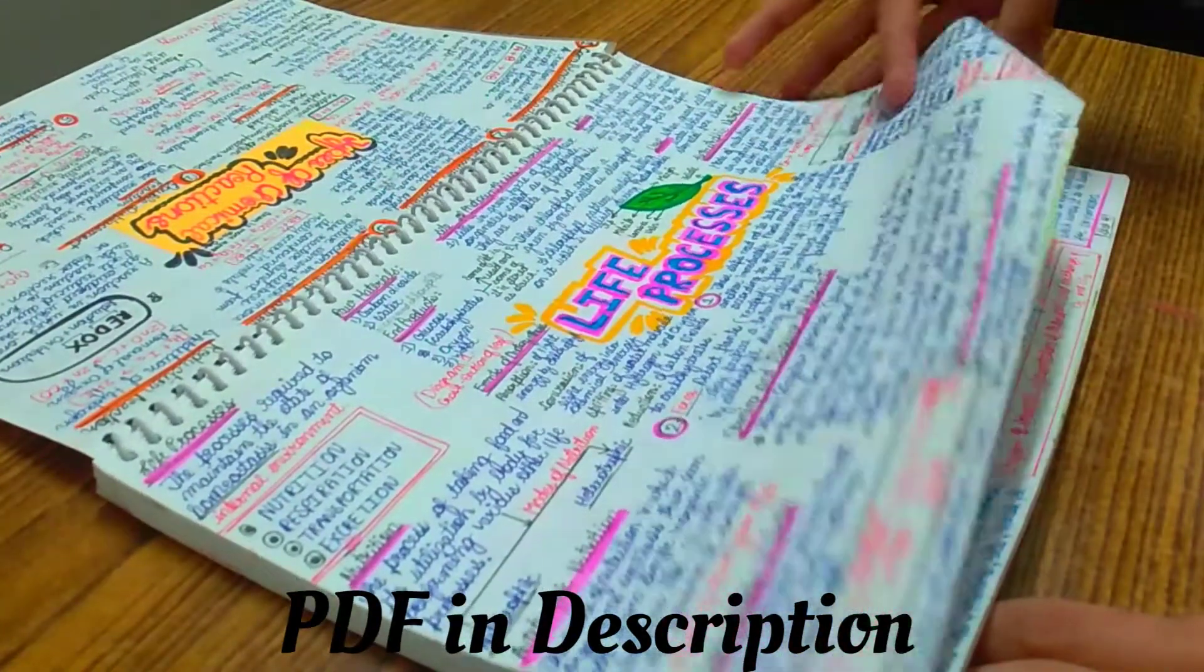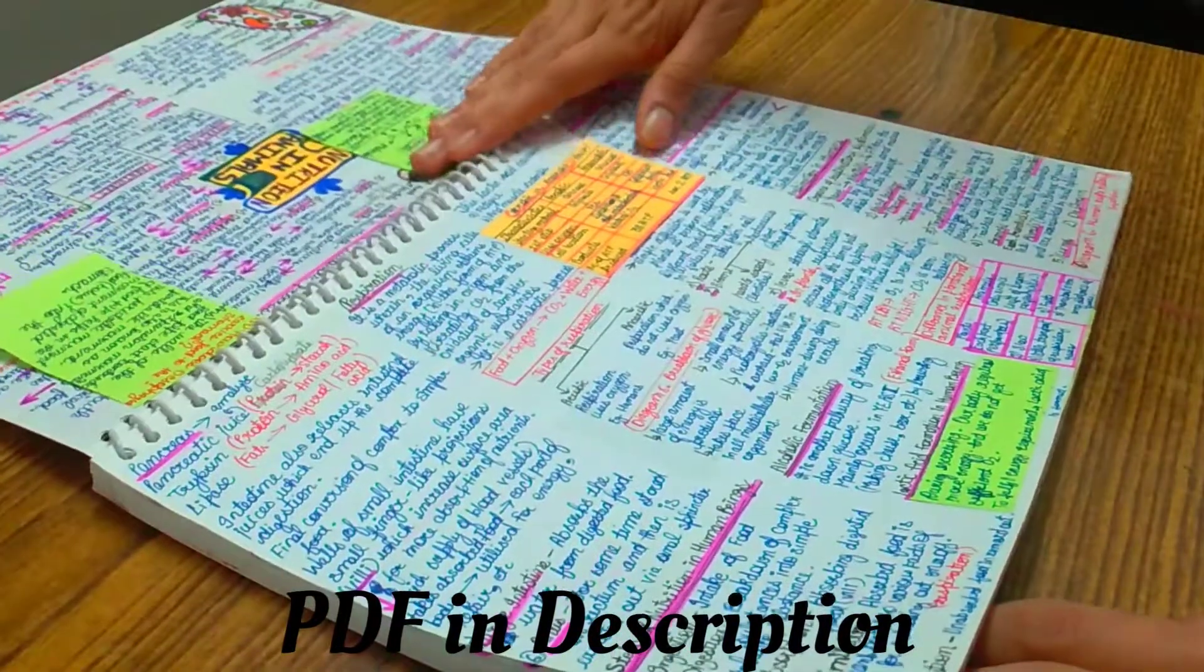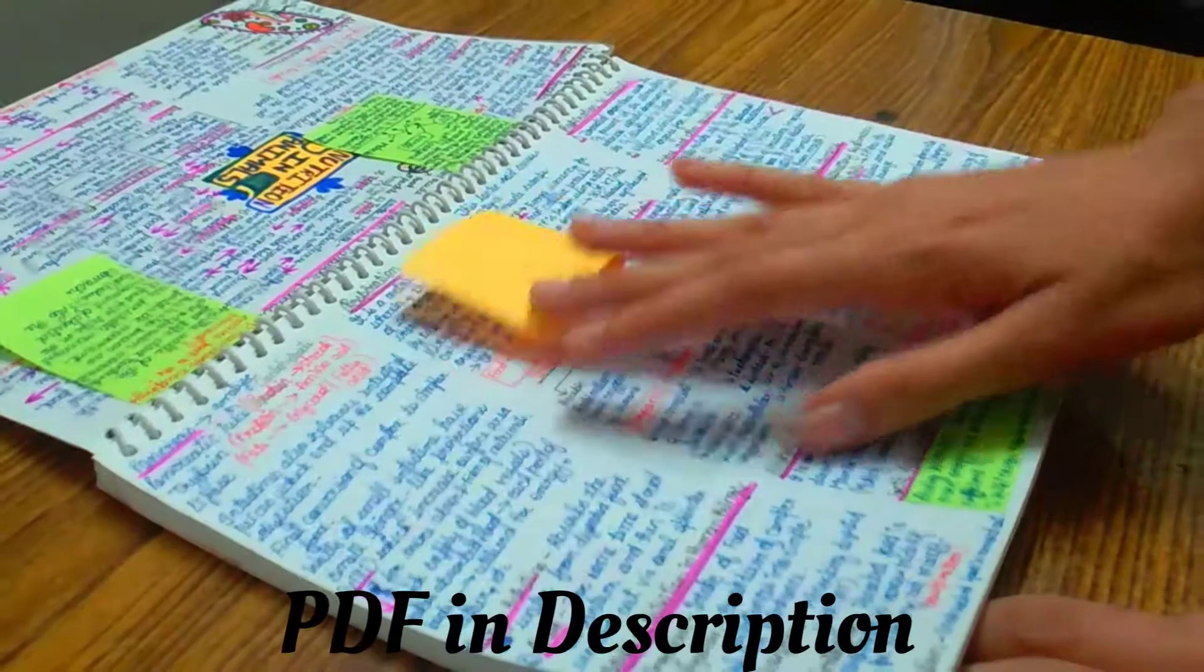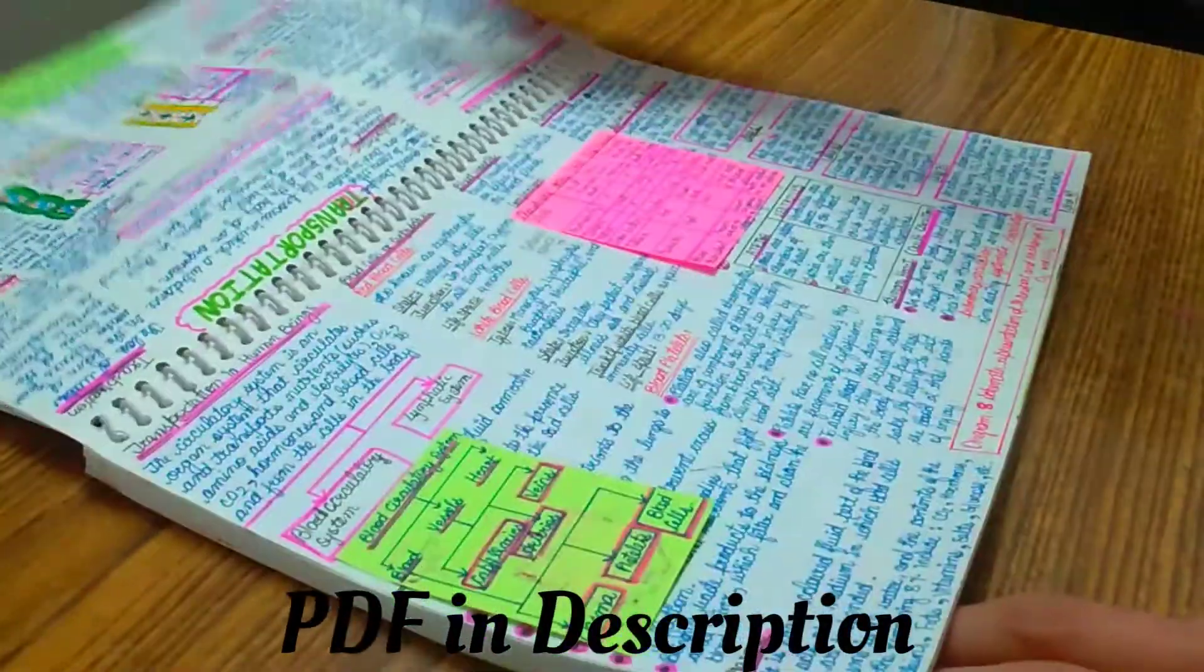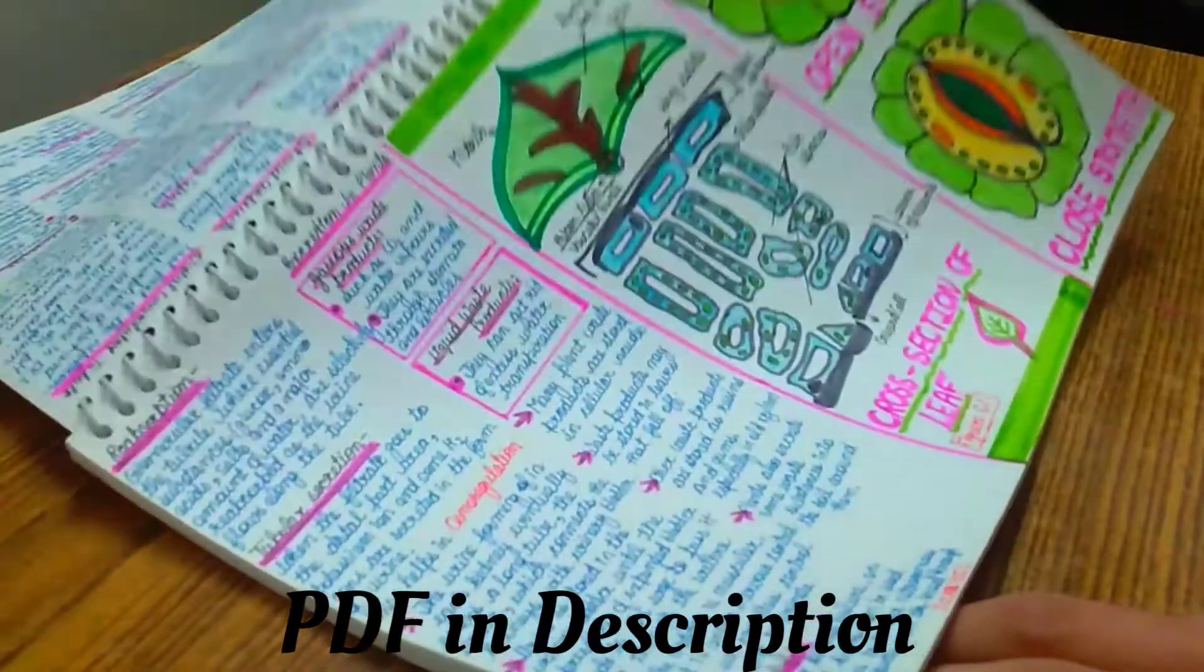Here you can see that I have comprised the whole large chapter of life processes in just four to five pages. So whenever you will require to revise it, it will be very easy to revise and your mind will readily accept to revise because it's just four to five pages. And being concise, they are not lacking any of the information, everything is written.